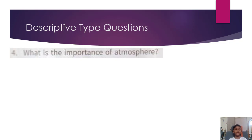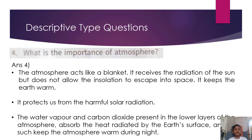What is the importance of the Atmosphere? The atmosphere acts like a blanket. It receives the radiation of the sun but does not allow the insulation to escape into space. It keeps the Earth warm and protects us from harmful solar radiation. The water vapor and carbon dioxide present in the lower layers of the atmosphere absorb the heat radiated by the Earth's surface, and keep the atmosphere warm during night.